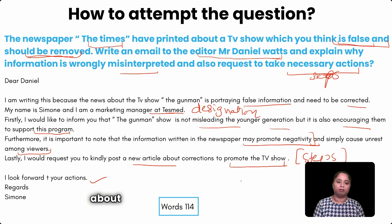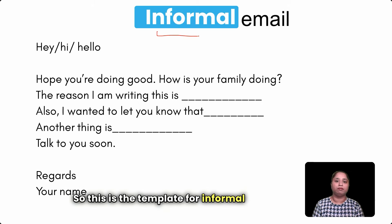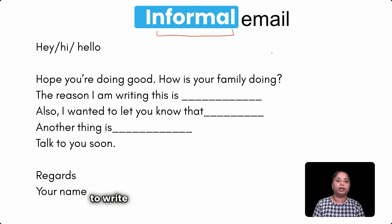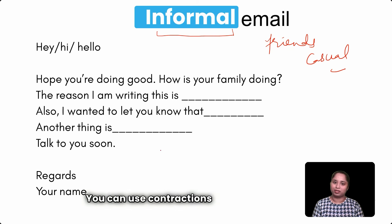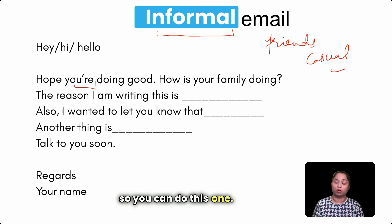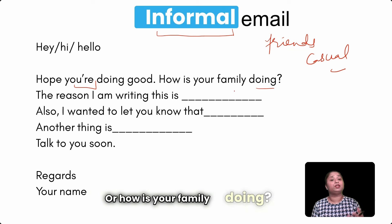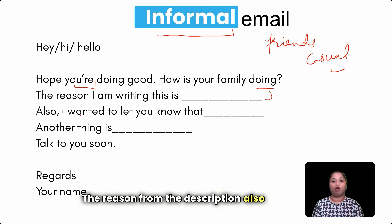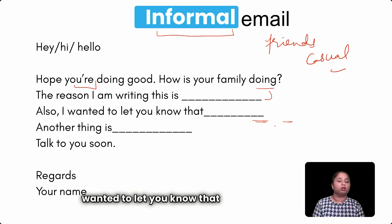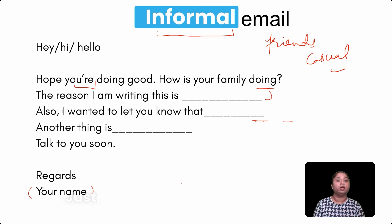Similarly, let's look at the template for informal email writing. Informal email is when you write to friends, family, or loved ones — keep your language casual. A pro tip: you can use contractions in informal emails but not in formal ones. For example, 'Hope you are doing good,' 'How is your family doing?' Use 'The reason I'm writing this is...' from the description, and 'Also I wanted to let you know that...' for the themes. Close with 'Talk to you soon, Regards, [your name].'